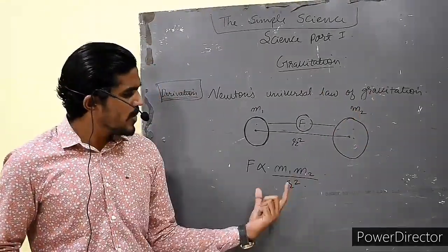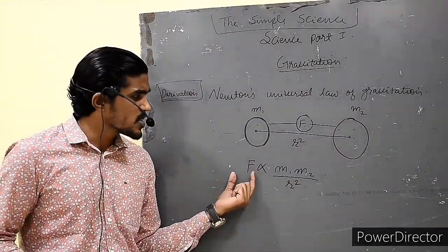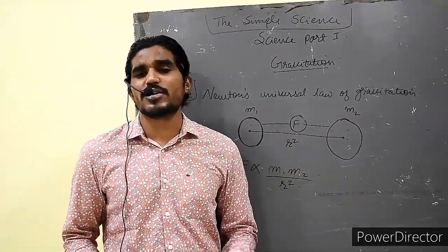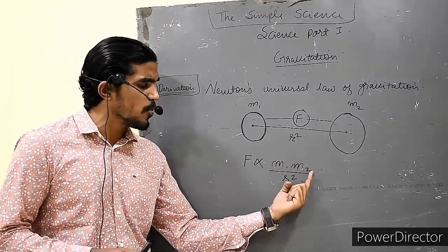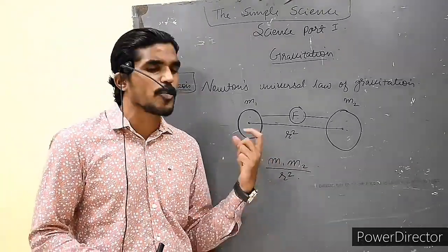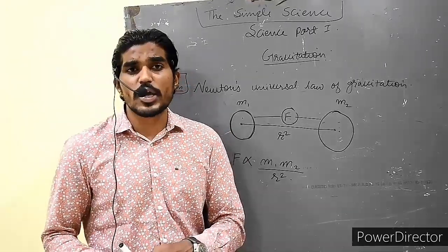So according to Newton's Law, we made a mathematical format. Force, according to Newton's Law, every object in the universe attracts every other object with a force F, which is directly proportional to product of their masses and inversely proportional to square of the distance from their center.